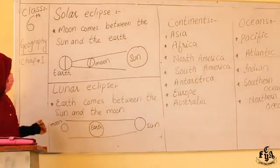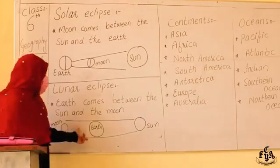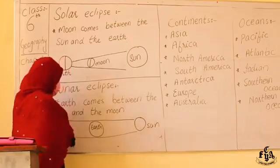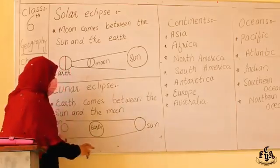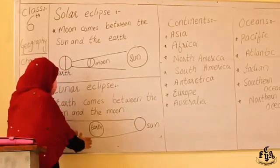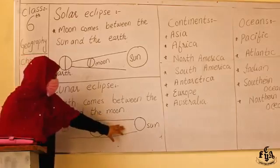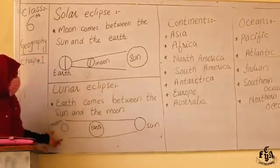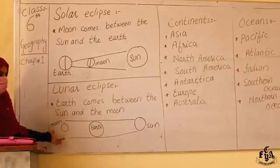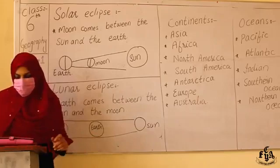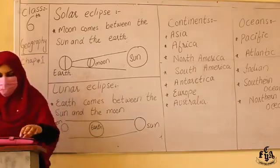A lunar eclipse occurs when the Earth comes between the Sun and the Moon. Because of this, the Moon cannot get light from the Sun, and as a result the Moon is not visible to us.